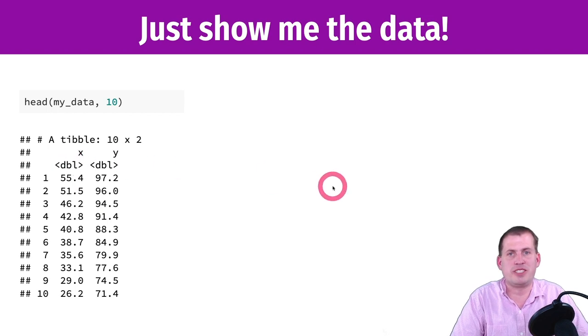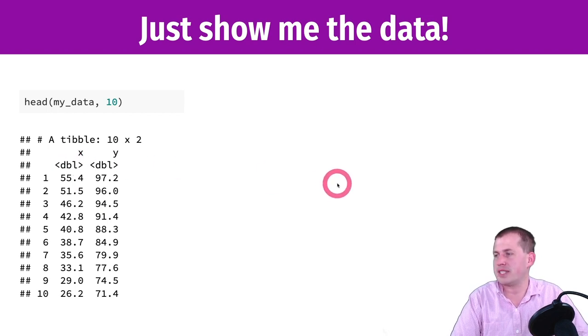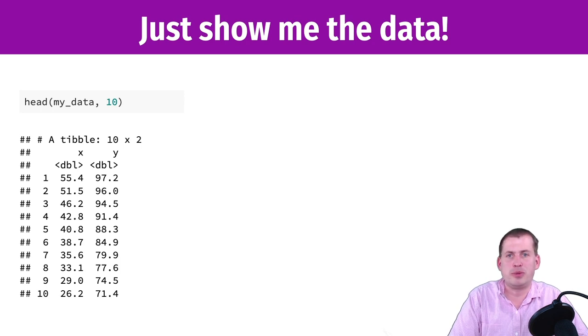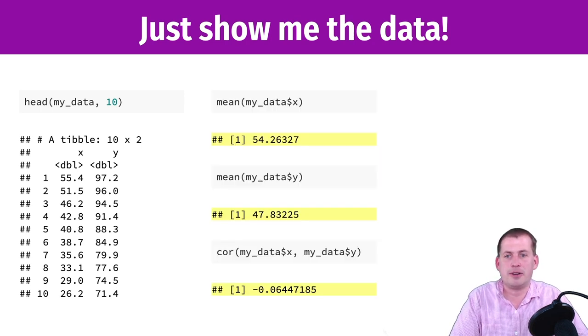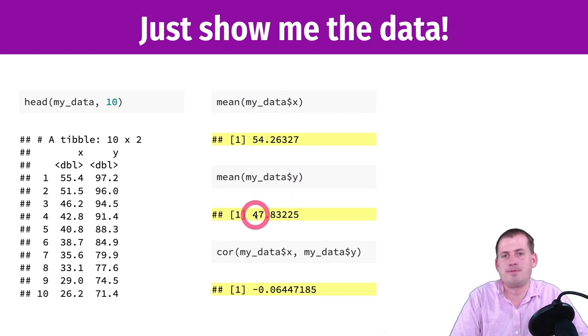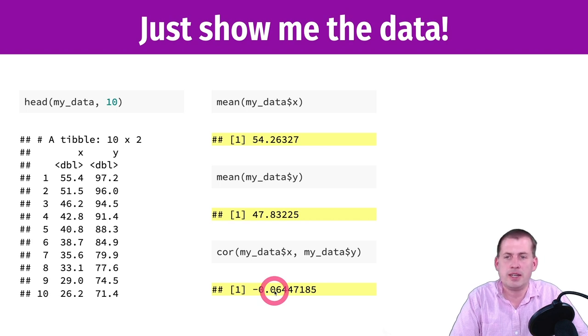Imagine they're just important data that you've collected and you want to know if they're related. You can look at that spreadsheet, you can run some simple R code to see how they're related. The average value of X is 54, the average value of Y is 47. The correlation between the two is basically zero—negative 0.06. So X and Y are not related.